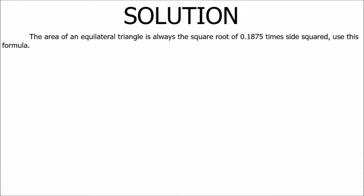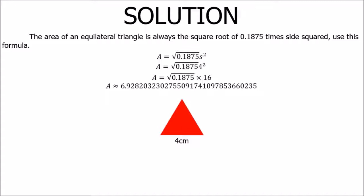This is the solution. This is the area formula for an equilateral triangle. So now, side squared. And then we get this answer. This is our final answer in square centimeters.